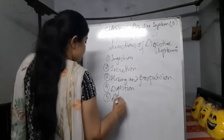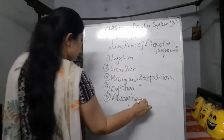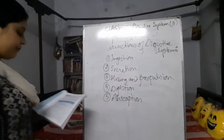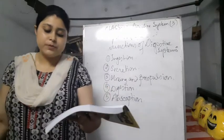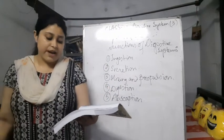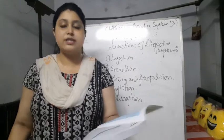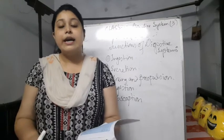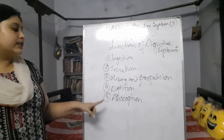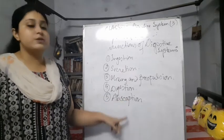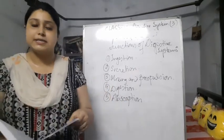The fifth function is absorption. The digestive system is also responsible for carrying out the process by which the products of digestion enter the circulation. Here, the digested foods are absorbed by the cells into the circulatory system.